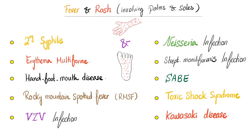If you knew 7 of this, you're a hero — I'll give you 10. Fever and a rash when the rash involves the palms and the soles: Secondary syphilis. Erythema multiforme with target-like lesions. Hand, foot, mouth disease — let me know what causes it in the comments. Rocky Mountain spotted fever — where do we find it? Anywhere but the Rocky Mountains; mostly the South and the Midwest like Kentucky. Varicella zoster virus infection. Neisseria infection. Strep moniliformis infection. Subacute bacterial endocarditis. Toxic shock syndrome. And Kawasaki disease.